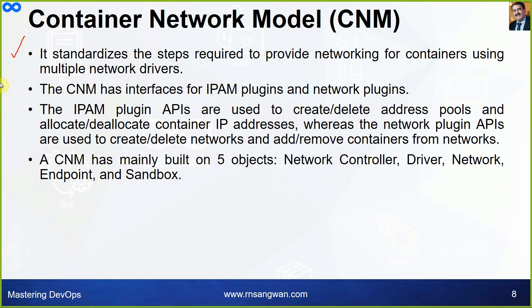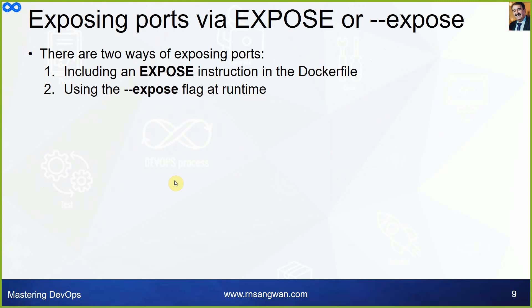CNM has interfaces for IPAM plugins and network plugins. The IPAM plugin APIs are used to create and delete address pools — similar to VCNs in the cloud — and allocate or deallocate container IP addresses (subnets and specific IPs). The network plugin APIs are used to create and delete networks (subnets) and add or remove containers from those networks. CNM is mainly built around five objects: network controller, driver, network, endpoint, and sandbox.